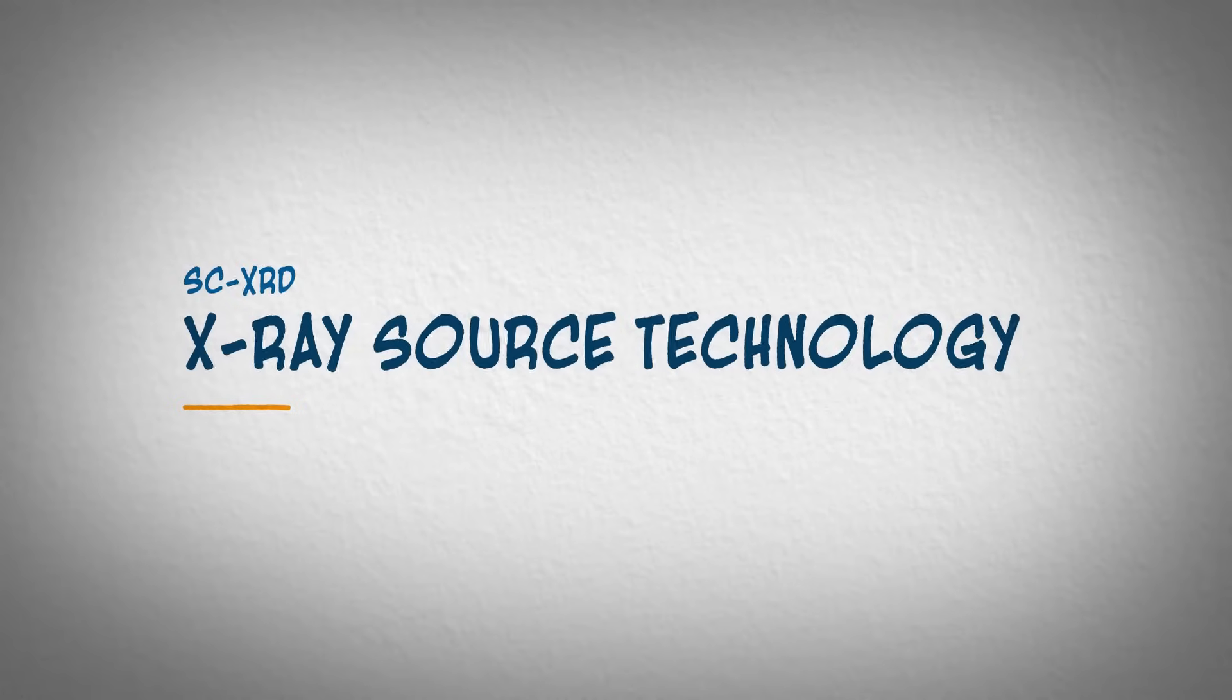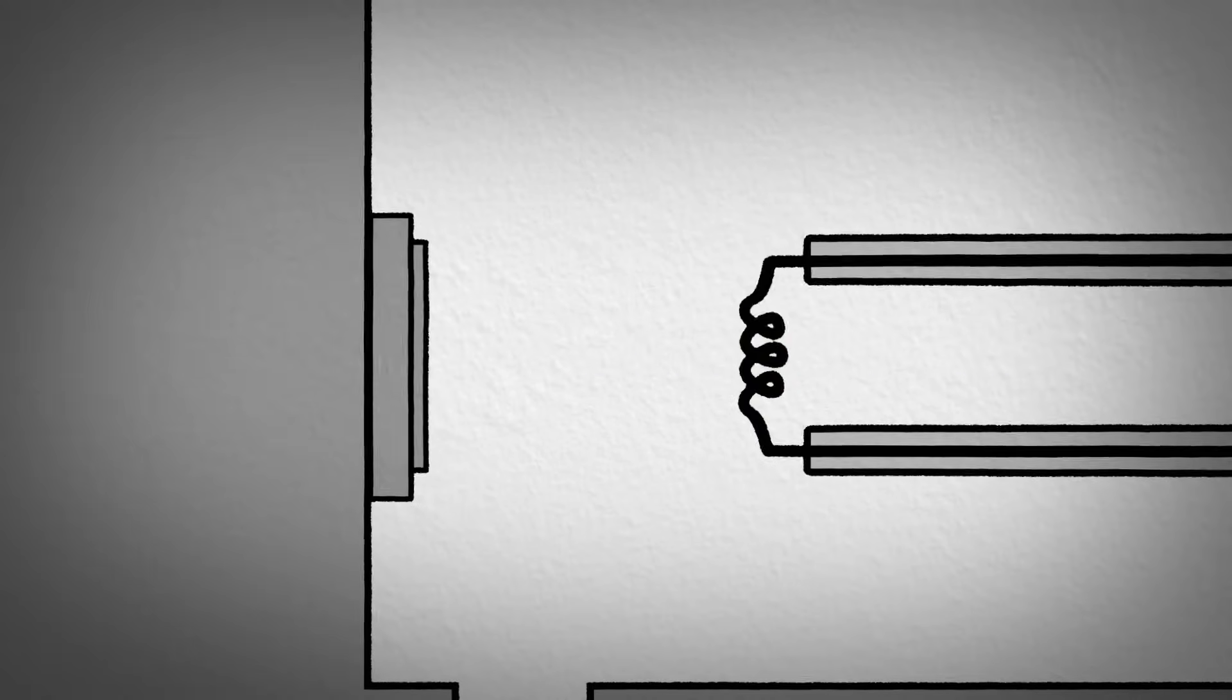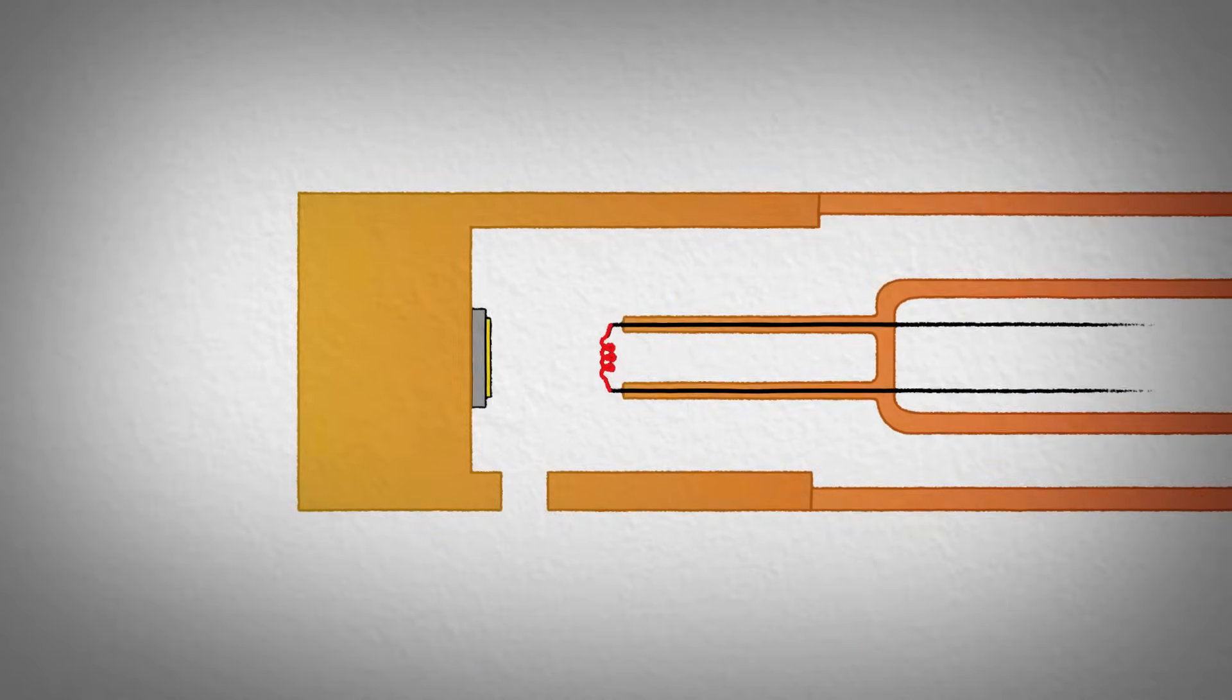How are X-rays generated? Classic X-ray sources consist of a tungsten filament and a metallic anode suspended in a vacuum tube.